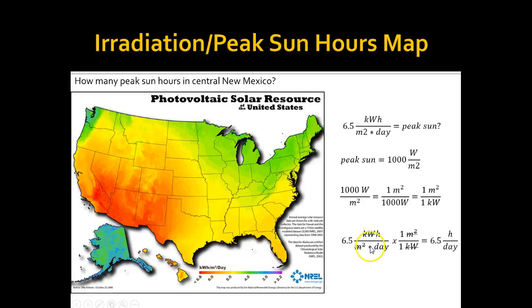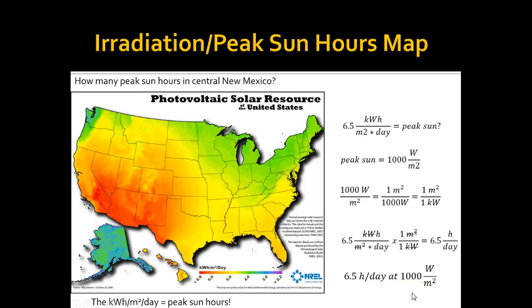So as it turns out, it's really easy to figure this out. 6.5 kilowatt hours per meter squared per day is equivalent to 6.5 hours per day of peak sun — in other words, 6.5 hours a day at 1,000 watts per meter squared. So kilowatt hours per meter squared per day, with a little bit of unit manipulation, is equivalent to peak sun hours. If you ever need to figure out peak sun hours and you have a map like this — there are a lot of maps like this out there, especially in the U.S. — you can actually figure out your peak sun.